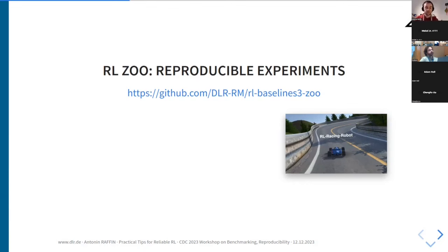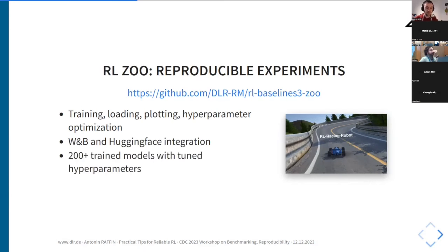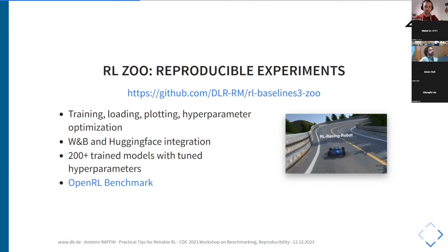The idea is to minimize potential mistakes when running experiments by letting you focus on your task rather than training scripts. In practice, it provides training, loading, and plotting scripts, as well as automatic hyperparameter optimization. We have integration with Weights & Biases and Hugging Face. We have more than 200 pre-trained models with tuned hyperparameters — so if you want to apply RL to a new problem, you can check out hyperparameters that worked on similar problems. We also have a full benchmark of all algorithms on many different tasks.